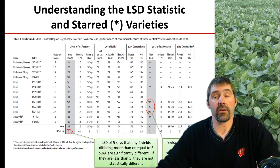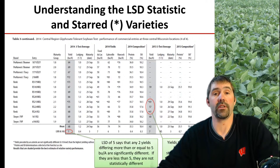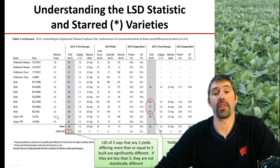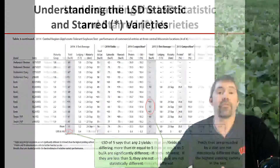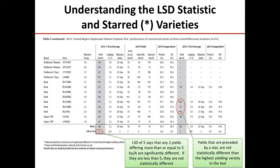We provide statistics to help growers understand whether one variety is truly different from another. We use an LSD level — for example, an LSD of five means any two yields differing by five bushels or more are statistically significantly different; less than five bushels means they are not statistically different. To help growers easily identify high-yielding varieties, yields preceded by a star indicate varieties that are not statistically different from the highest-yielding variety at a given location or within a given region. This helps growers quickly identify those top-performing varieties.